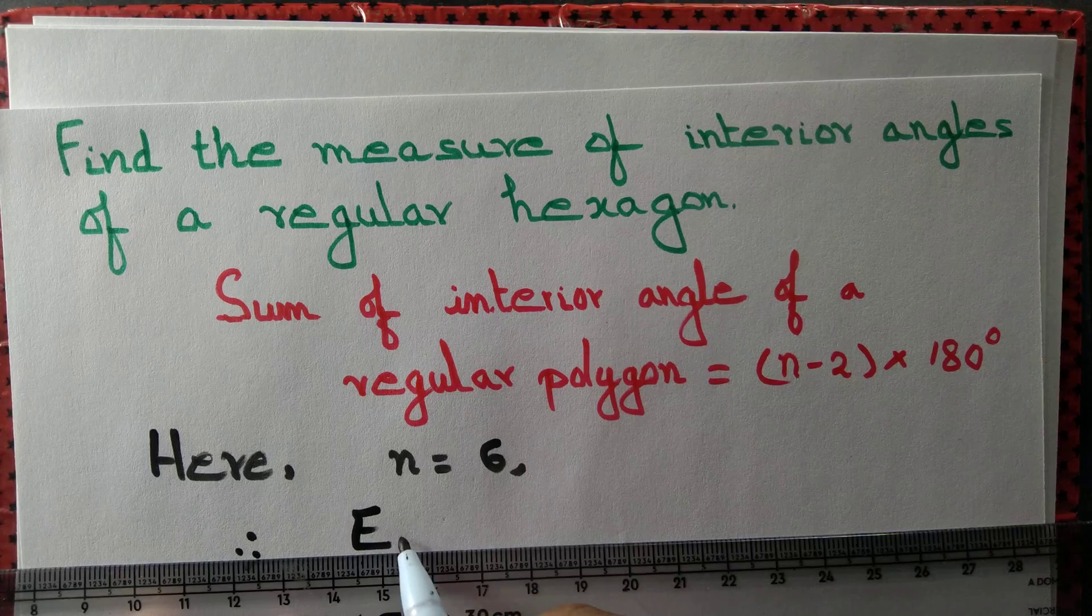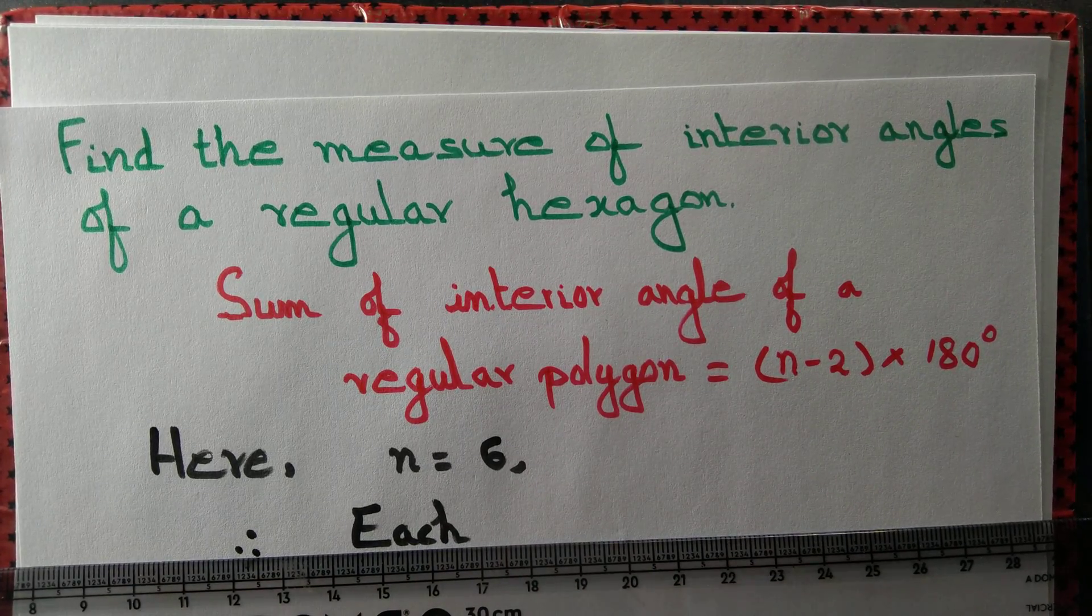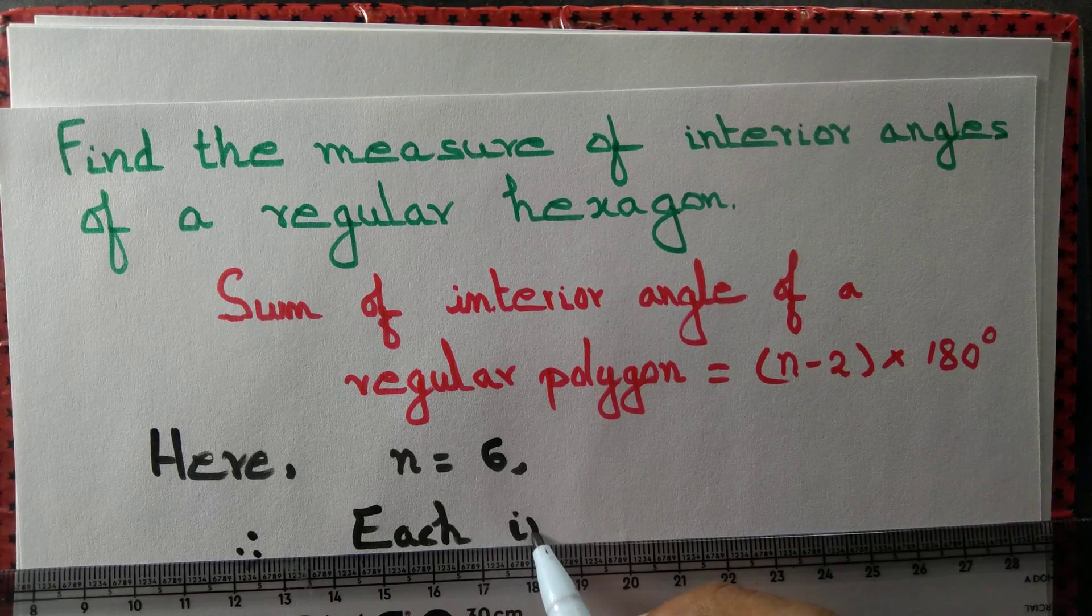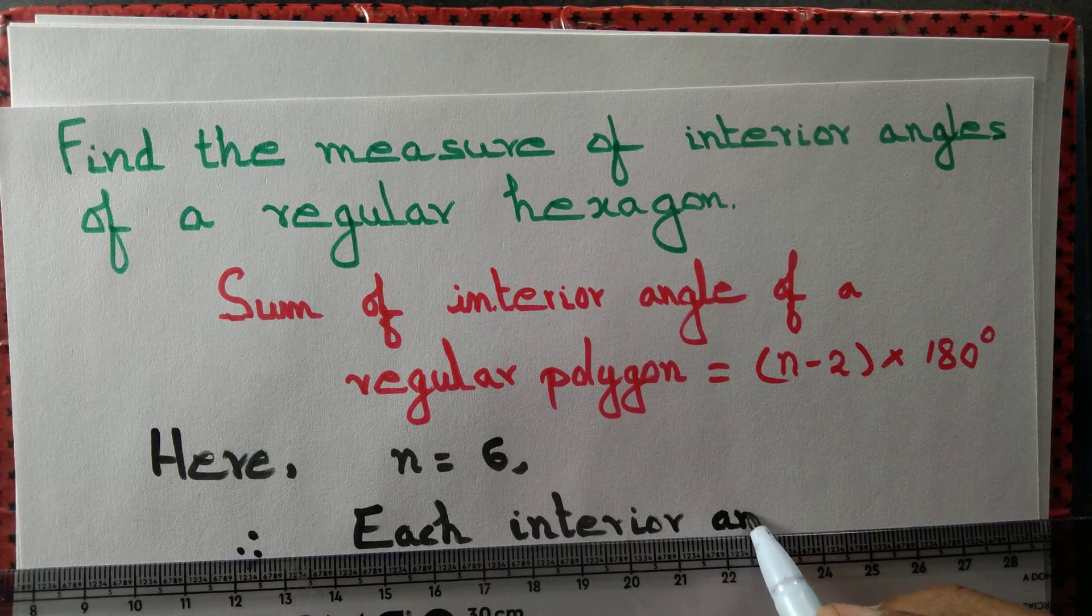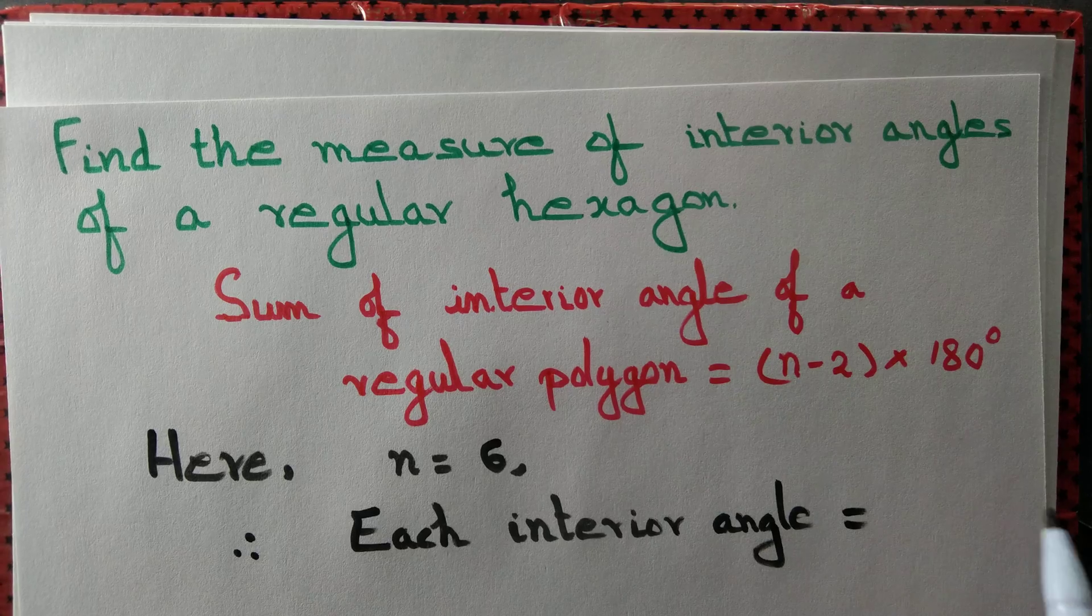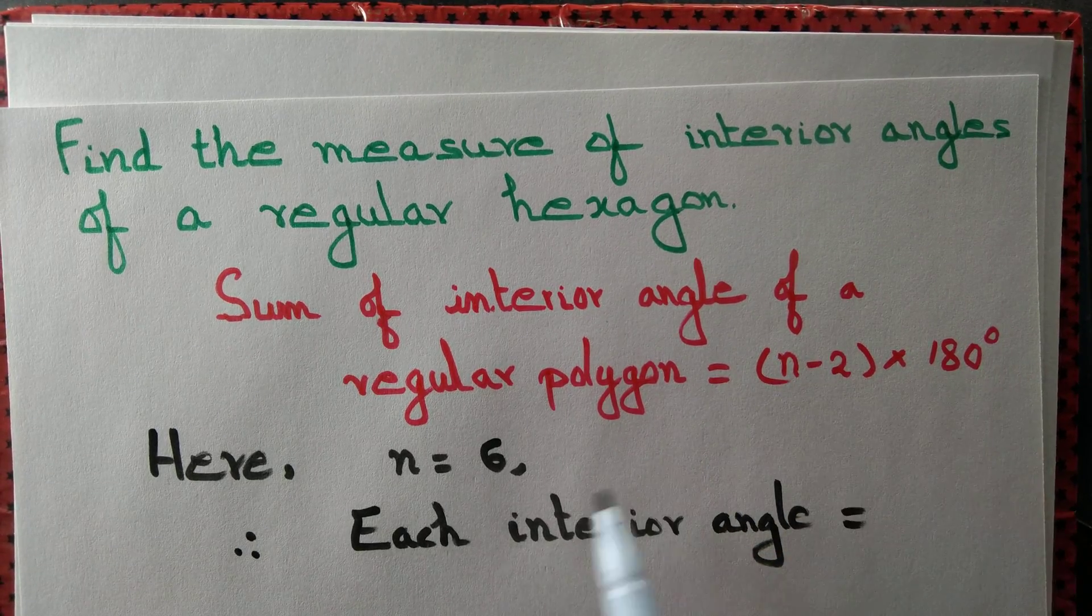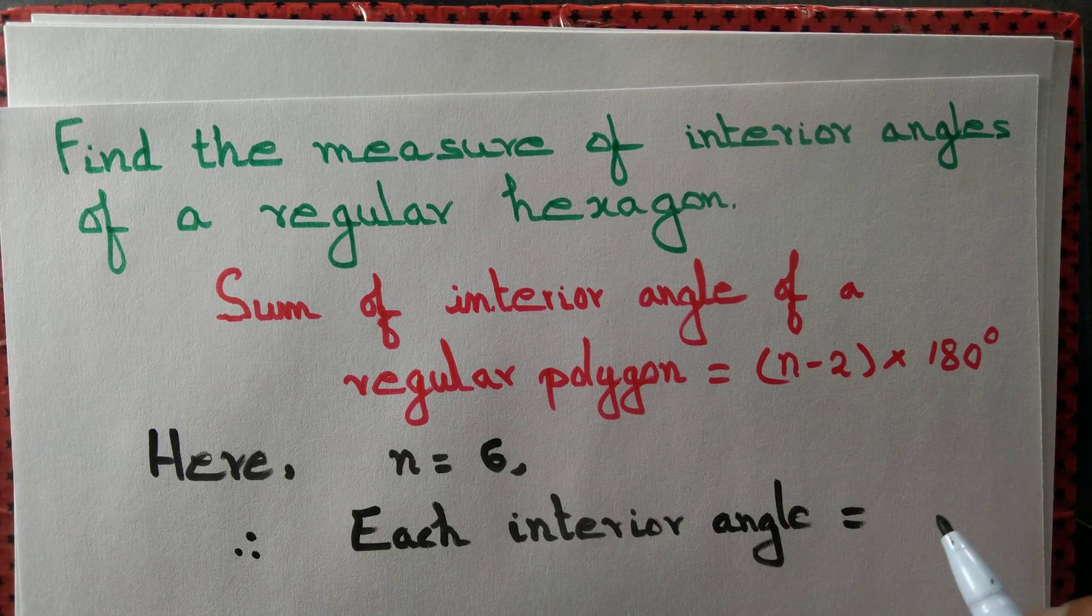each interior angle—you know that for a regular hexagon all the interior angles are equal—so each interior angle equals the total divided by the number of sides, that is equal to the number of angles. There are 6 angles.